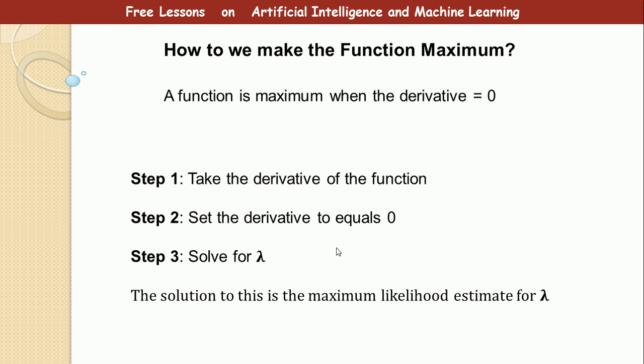Now, how do we make this function to be maximum? Because we are trying to do maximum likelihood. It means that we are going to make this function to become maximum. A function is maximum when the derivative of that function is zero. So for us to make this function to be maximum, step one, take the derivative of the function. Step two, set the derivative to be equal to zero, and then you solve for lambda. So the solution to this is the maximum likelihood estimate for lambda. I think this makes sense.